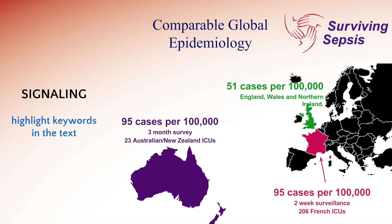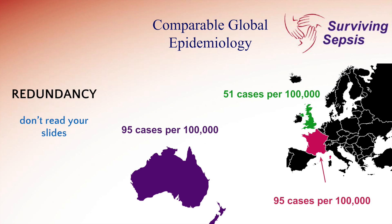The signaling principle says to highlight what's important, so I made the key numbers bigger. What we're really talking about on these slides is global incidence — specifically 95 cases per 100,000 — so that's what I made more prominent. The redundancy principle says don't read your slides. Rather than saying '51 cases per 100,000 in the UK,' if you're going to say UK, don't also type it out. You could get away with just saying the global incidence of sepsis is about the same worldwide, and then show these three countries where it was very similar.